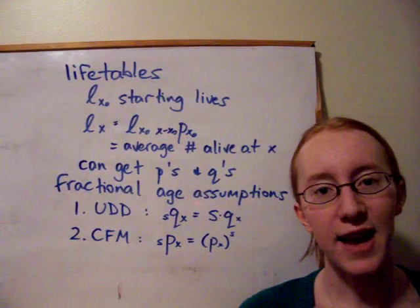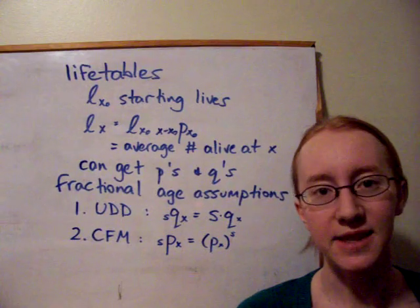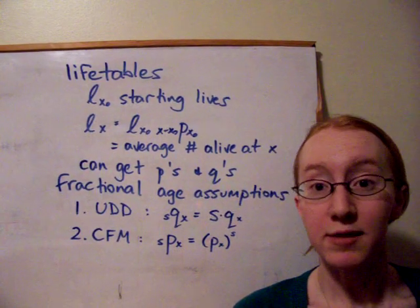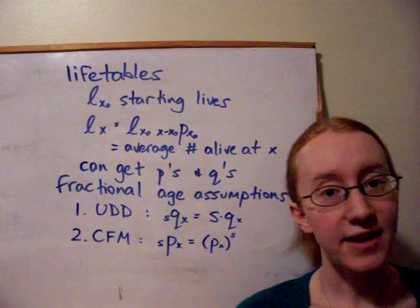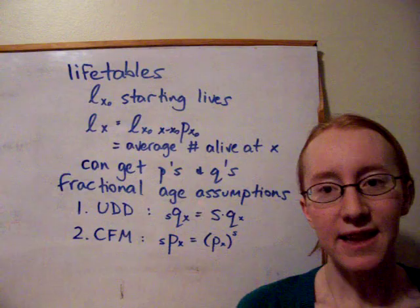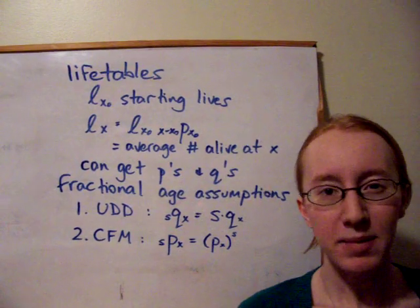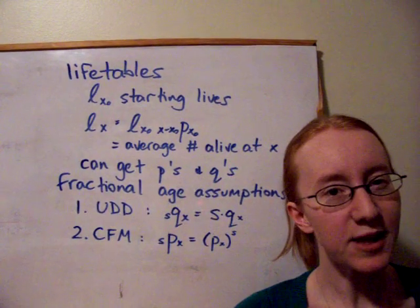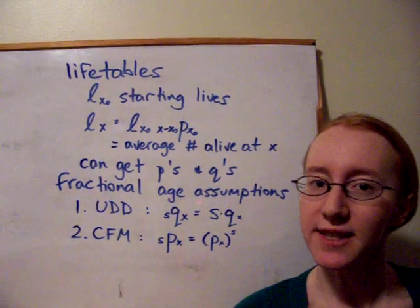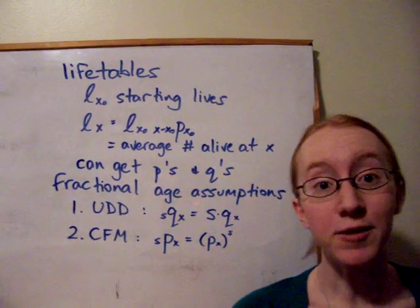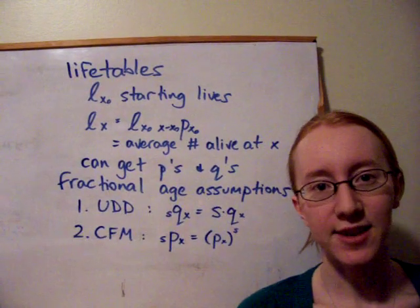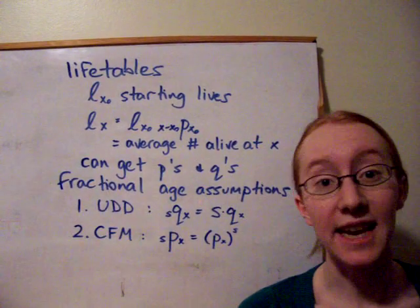That's for s between 0 and 1. We got a couple of other results that derive from that, including how to calculate PX. The probability density function within each year of age turns out to be constant, and the force of mortality within each year of age turns out to be increasing.